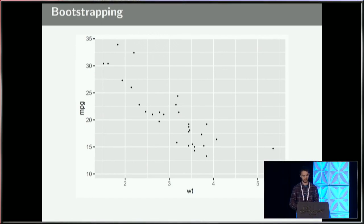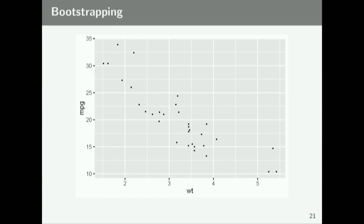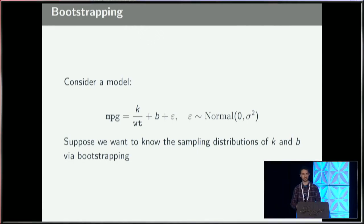Finally I'll work through a more extended example where the real power of Broom comes in: working with multiple models at once. Suppose we have the MT cars data and want to model miles per gallon versus weight. This looks like an inverse relationship, so let's use nonlinear least squares. We define a model with an inverse relationship with weight — the particular model isn't critical — and we'd like to fit this on bootstrap datasets to see what the uncertainty in the parameters K and B is.